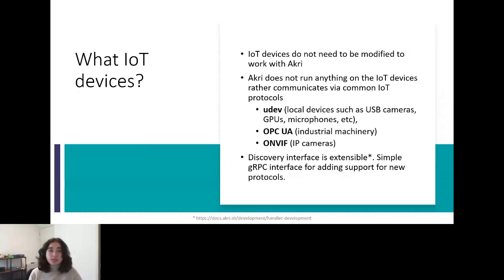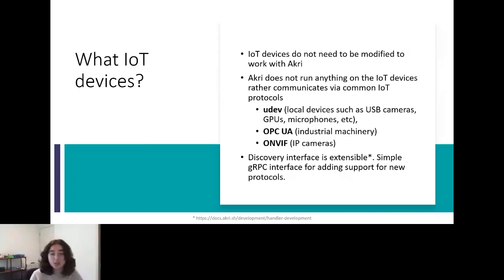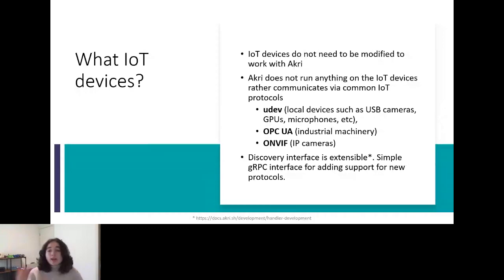Specifically, we have support for Udev, for discovering devices on the local Linux device file system — these can be any USB device such as USB cameras, USB microphones, or embedded devices such as GPUs. We also have support for discovering industrial machinery via OPC-UA. And finally, we have support for discovering IP cameras via the ONVIF protocol, and that's the one we're highlighting in our demo scenarios today.